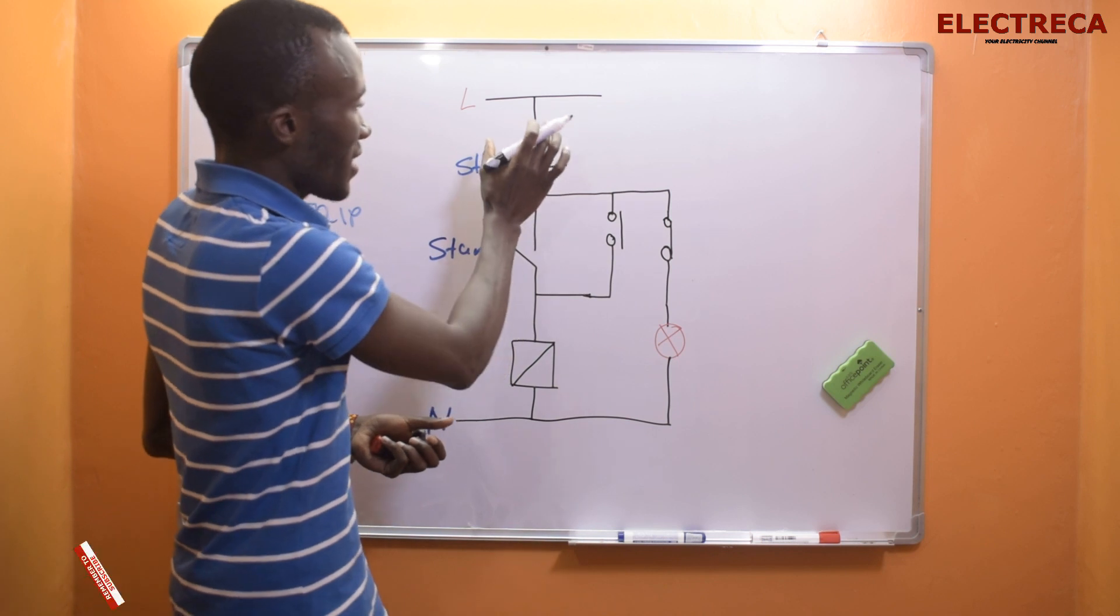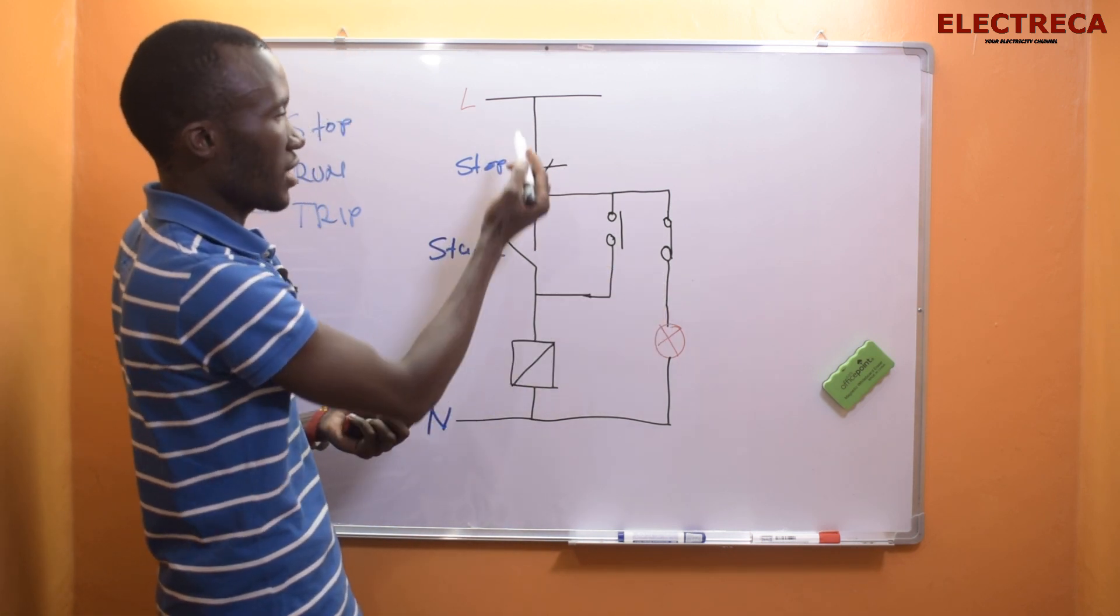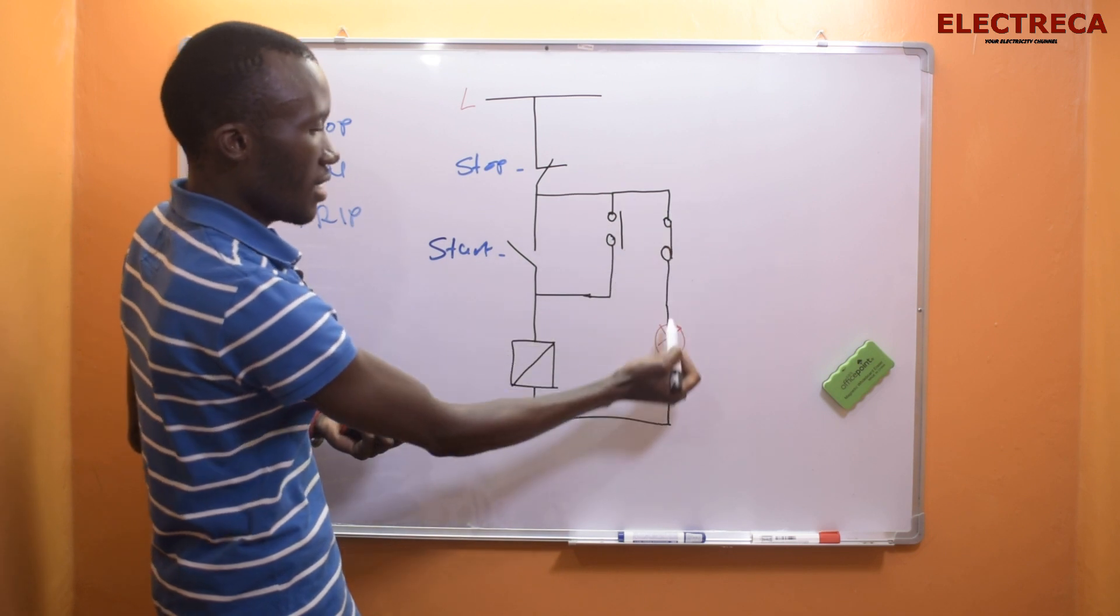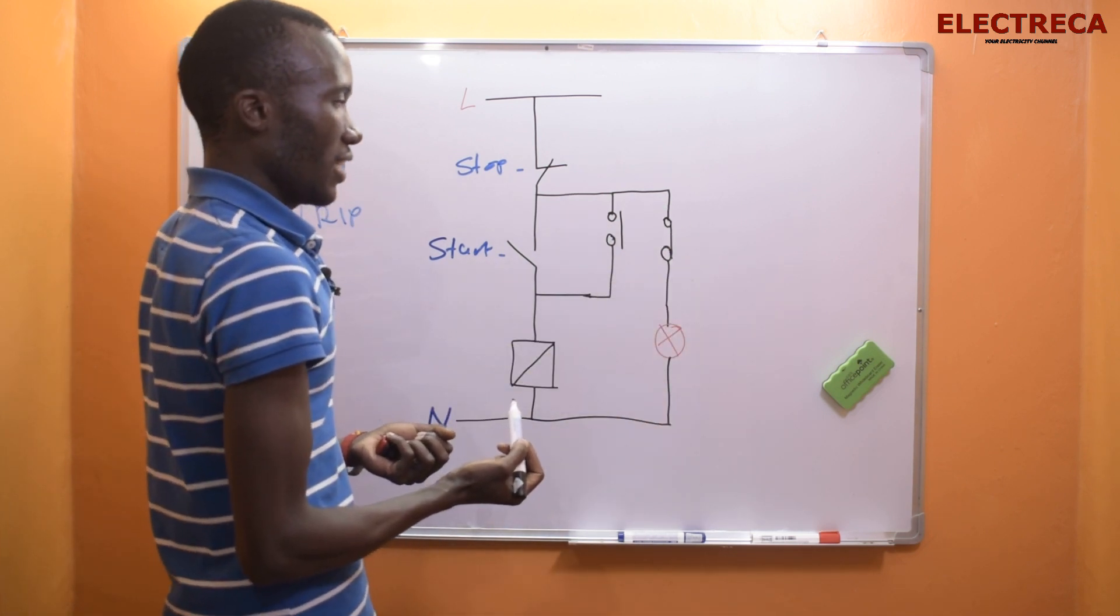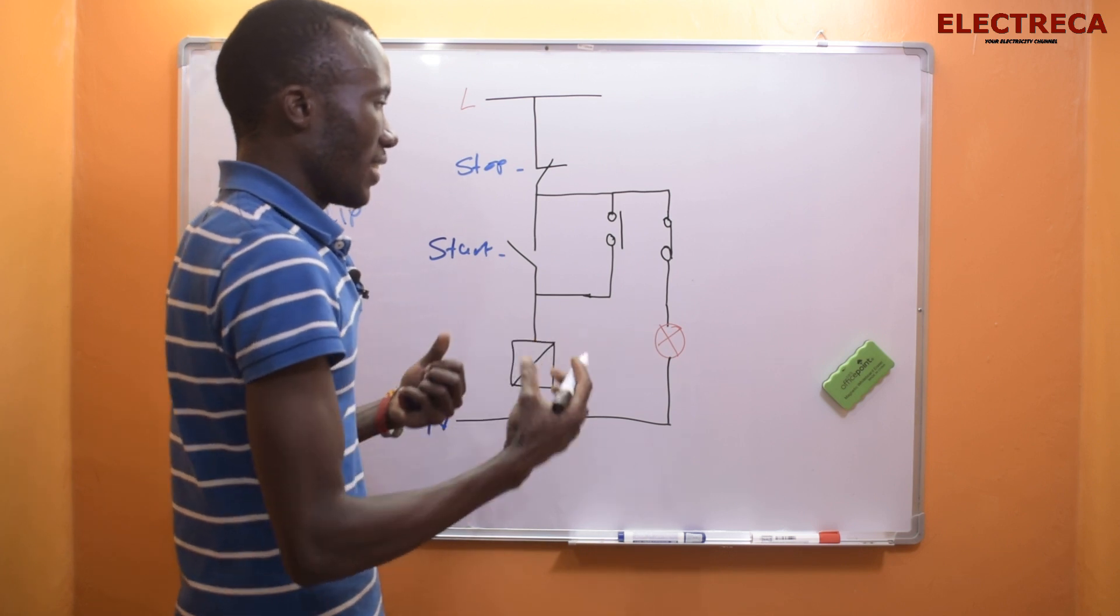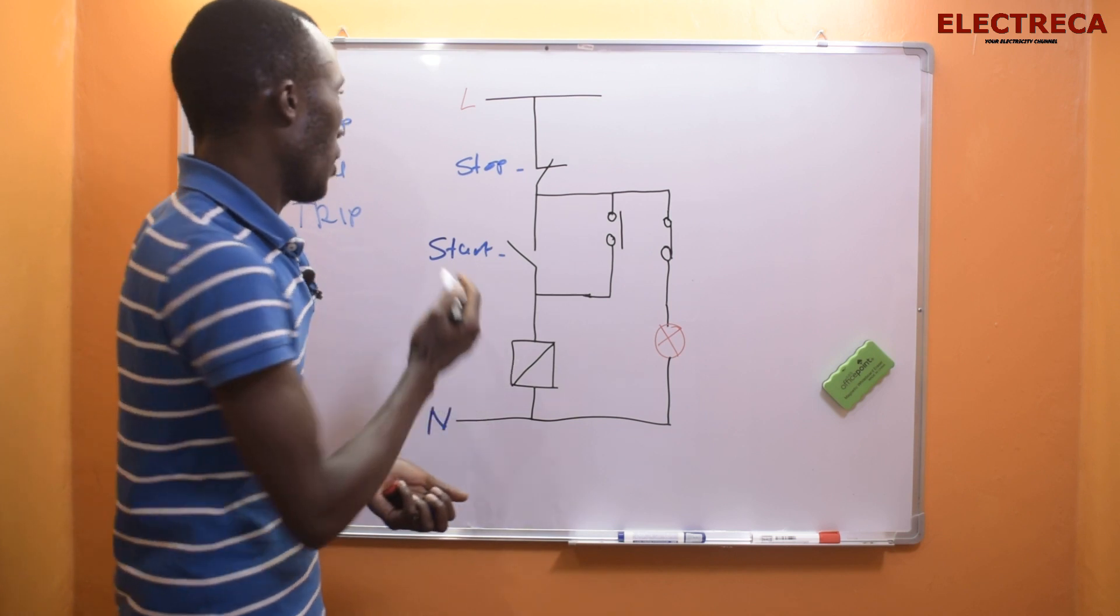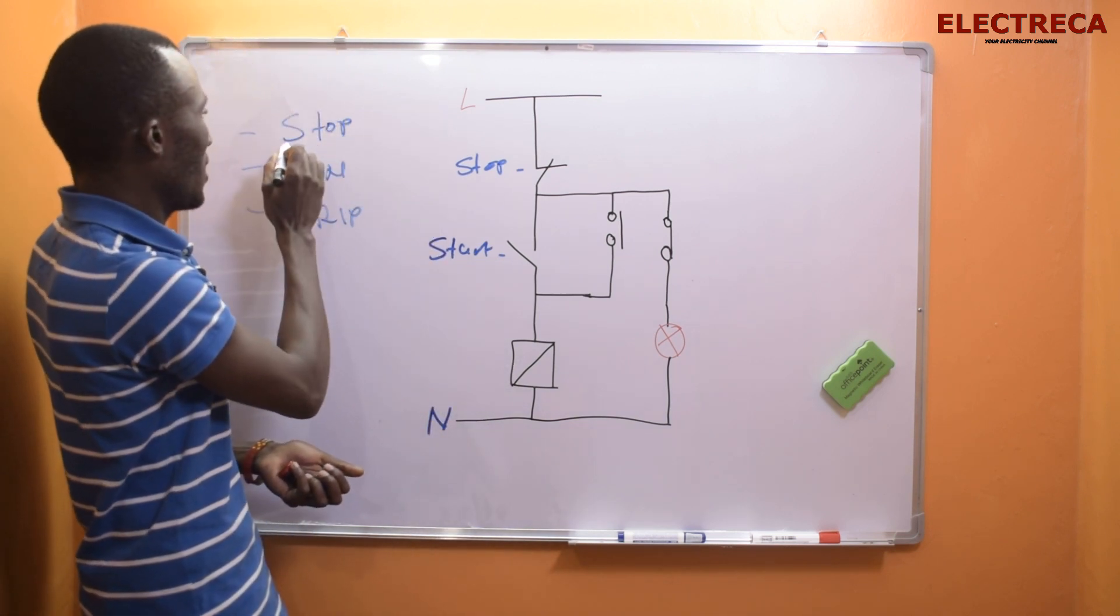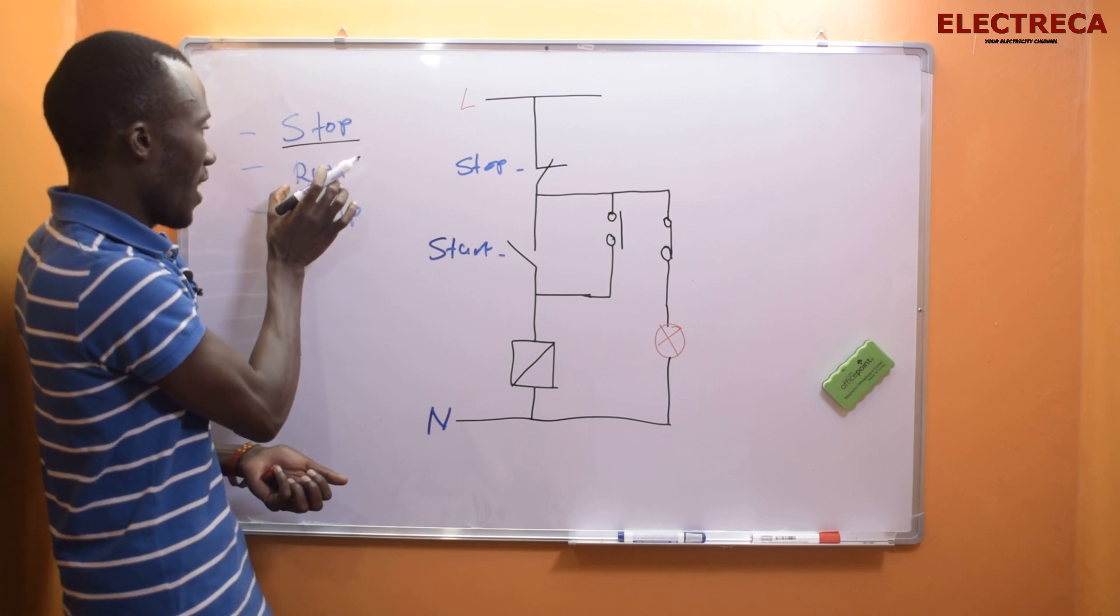Because the circuit is at standstill, definitely this is normally closed, so our current will now be going through here. Now if the circuit can run, and now the second part is done, then run.